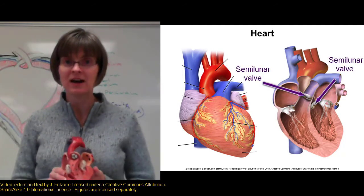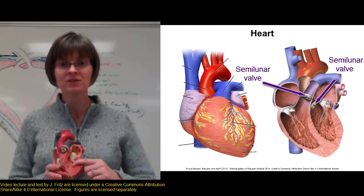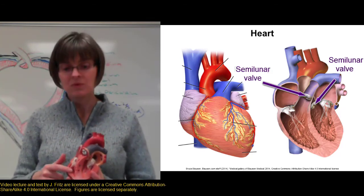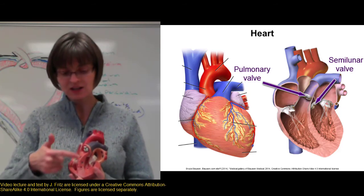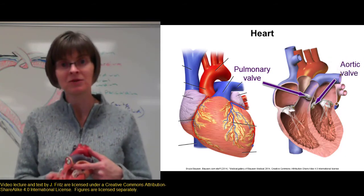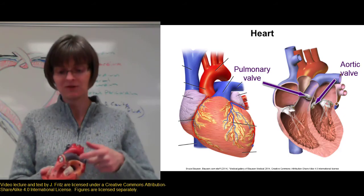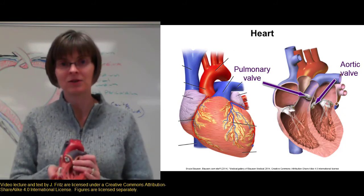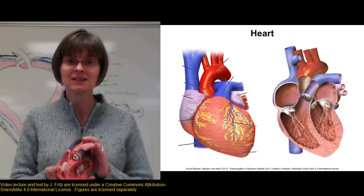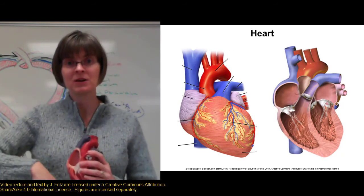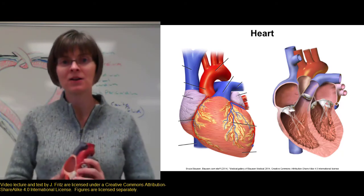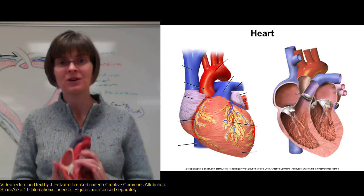We also have two semilunar valves, found between the ventricles and the arteries. On the right side of the heart, we have the pulmonary semilunar valve, which keeps blood from flowing from the pulmonary artery back into the ventricle. On the left side, we have the aortic semilunar valve, which keeps blood from flowing from the aorta back into the ventricle. These valves are closed when the heart is relaxed, so blood doesn't flow back from the arteries into the ventricles. When the ventricles contract, the pressure pushes the cusps out of the way so the valves open and blood can flow into the arteries.